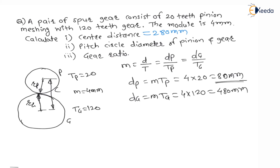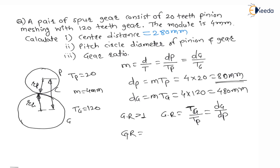The third question is to find gear ratio. The gear ratio is always more than 1. Gear ratio is number of teeth on gear divided by number of teeth on pinion, or diameter of gear divided by diameter of pinion. Therefore, gear ratio = 120 / 20 = 6.